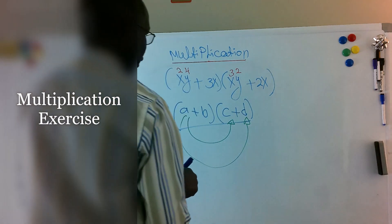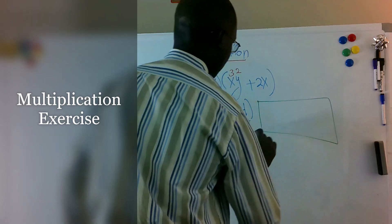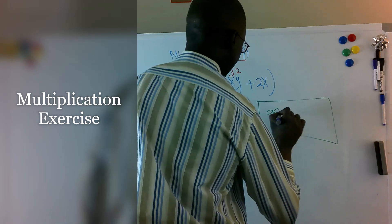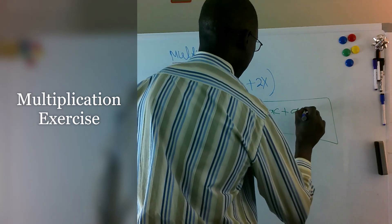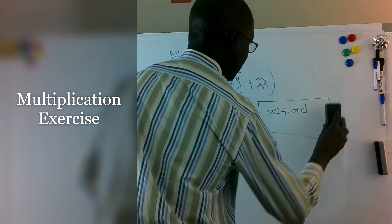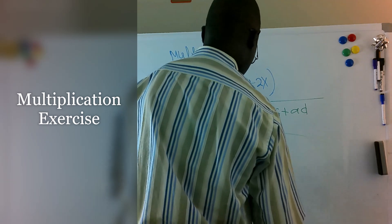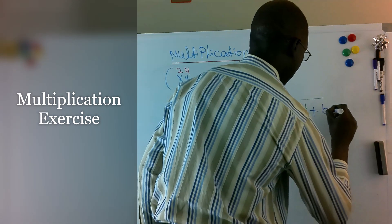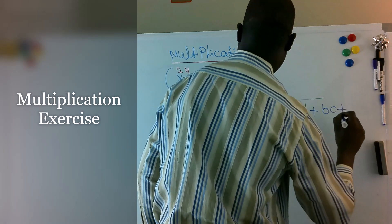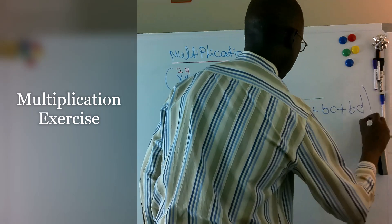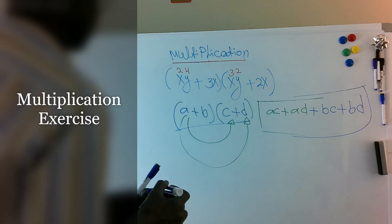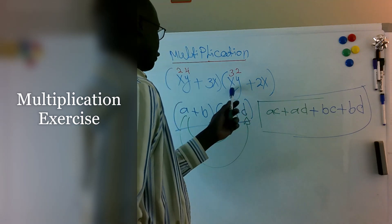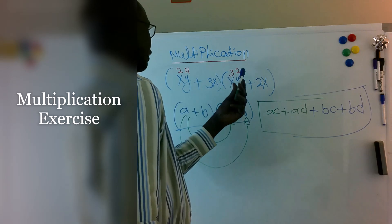So it should look like: a times c, plus a times d, plus b times c, plus b times d. When you have like terms — for example c with c, or x with x and y — we combine the exponents on top only.